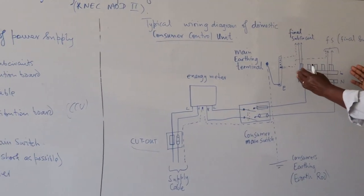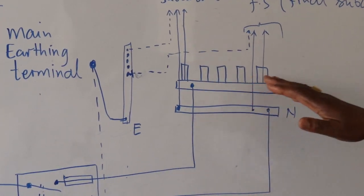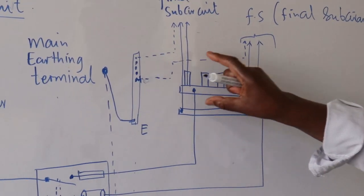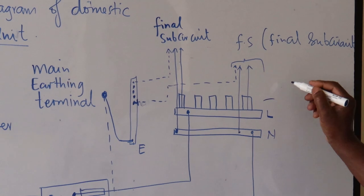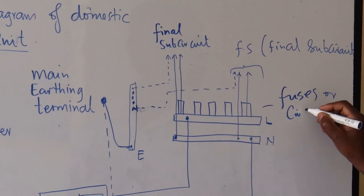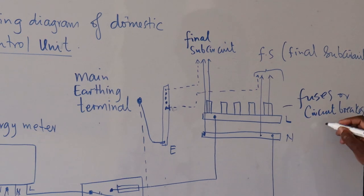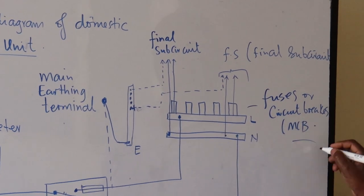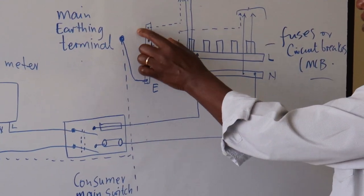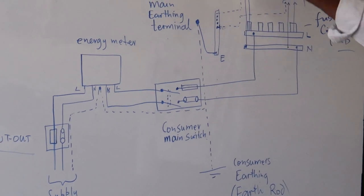If it's a small installation, this will be either six or four final sub-circuits. We have a live busbar connected. Now we can have fuses — the common trend nowadays is to have circuit breakers, sometimes referred to as MCBs. And then we have a neutral busbar where we take off our neutrals, and an earth busbar where we take off our ECC, the earthing continuity conductor.